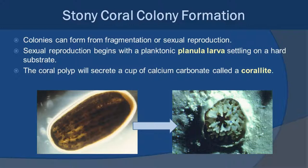Now let's go back to hermatypic corals and stony coral colony formation. These massive coral colonies have to start somewhere. They can start by fragmentation — a little piece of coral breaks off a larger coral, lands somewhere, and starts to grow — or they can go through sexual reproduction. In sexual reproduction, we begin with a planktonic planula larvae, which floats around and eventually settles on a hard substrate. That larvae will metamorphose into a little coral polyp, which will then start to secrete calcium carbonate and create a little cup called a corallite.